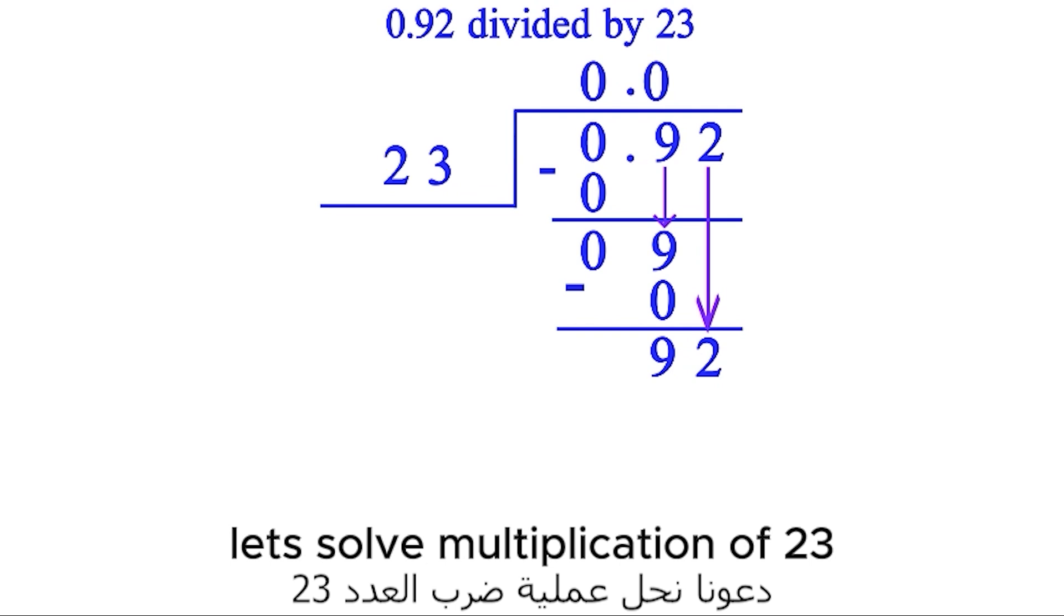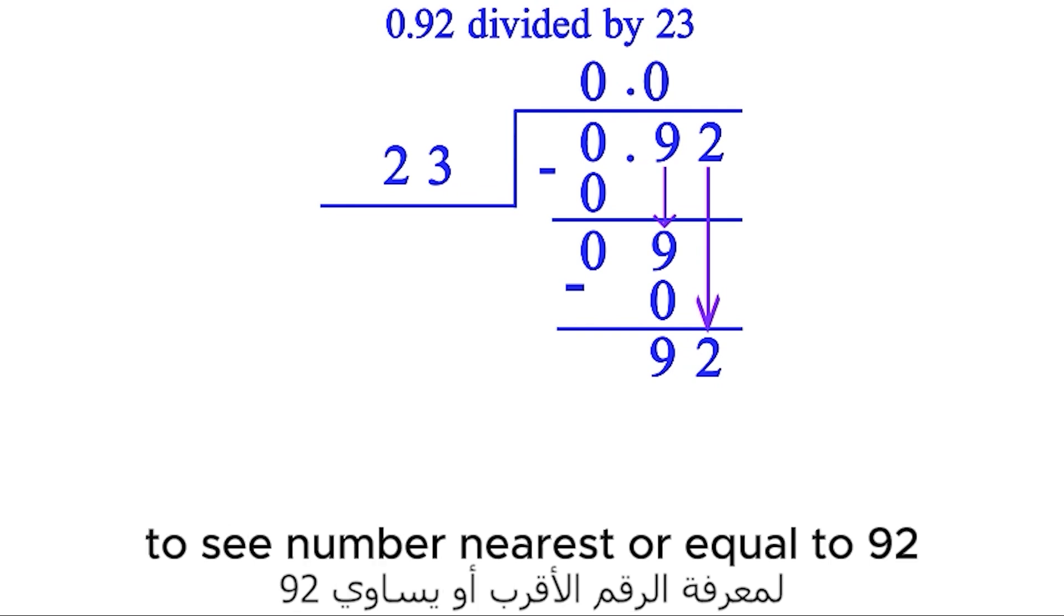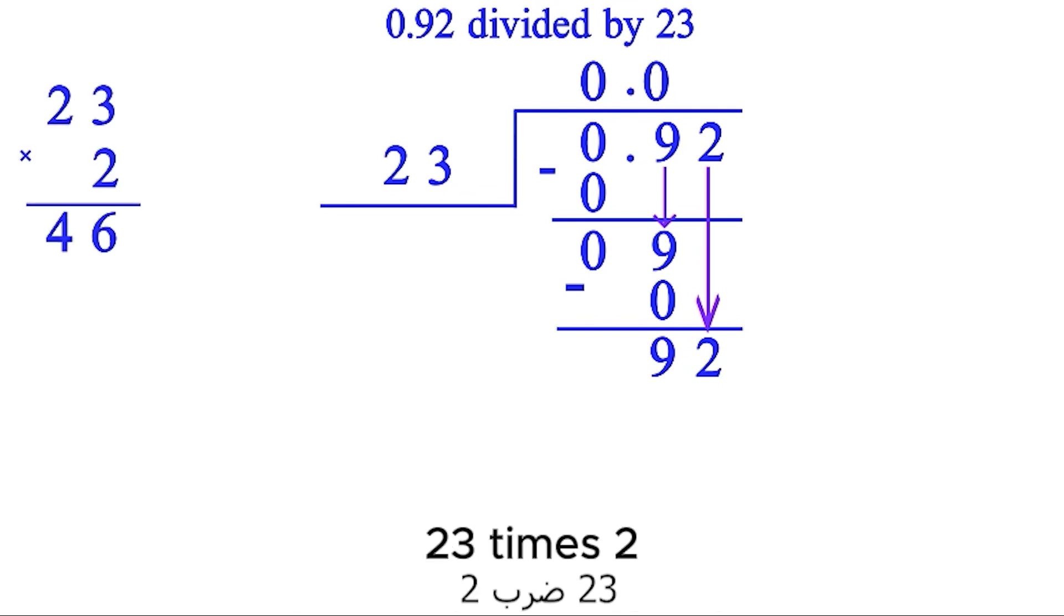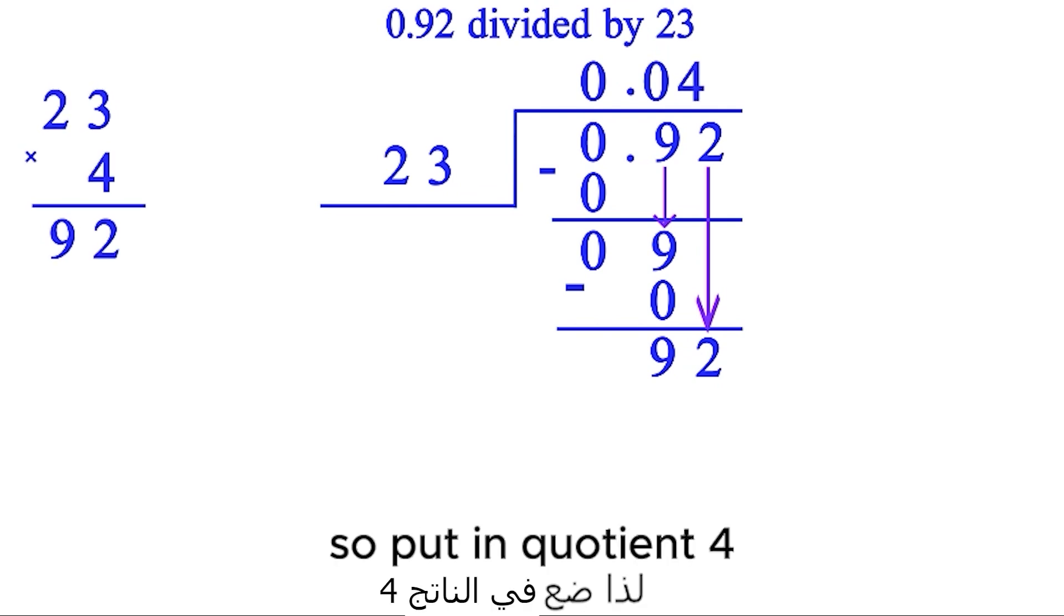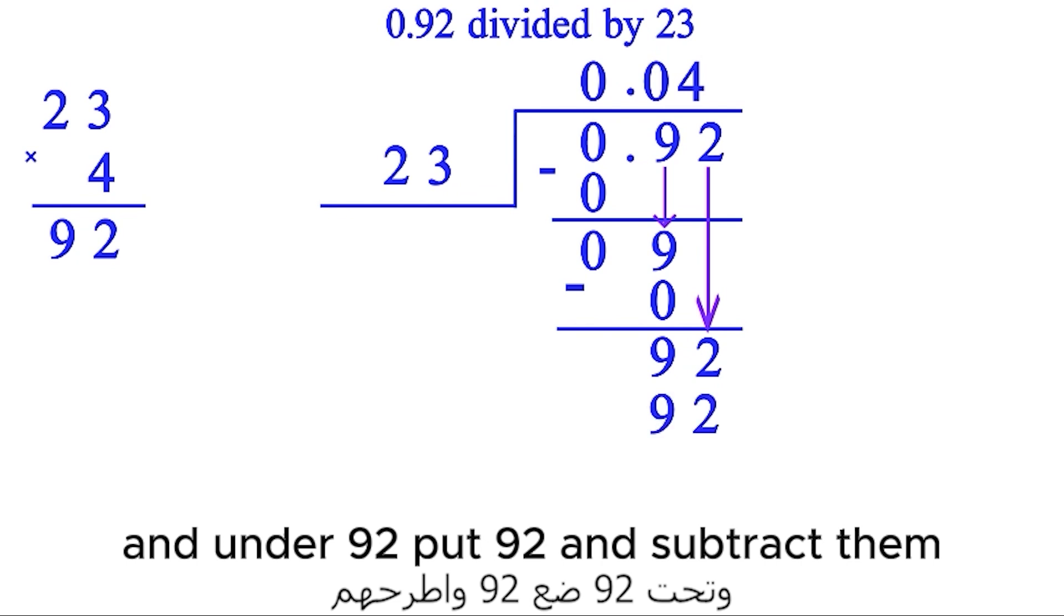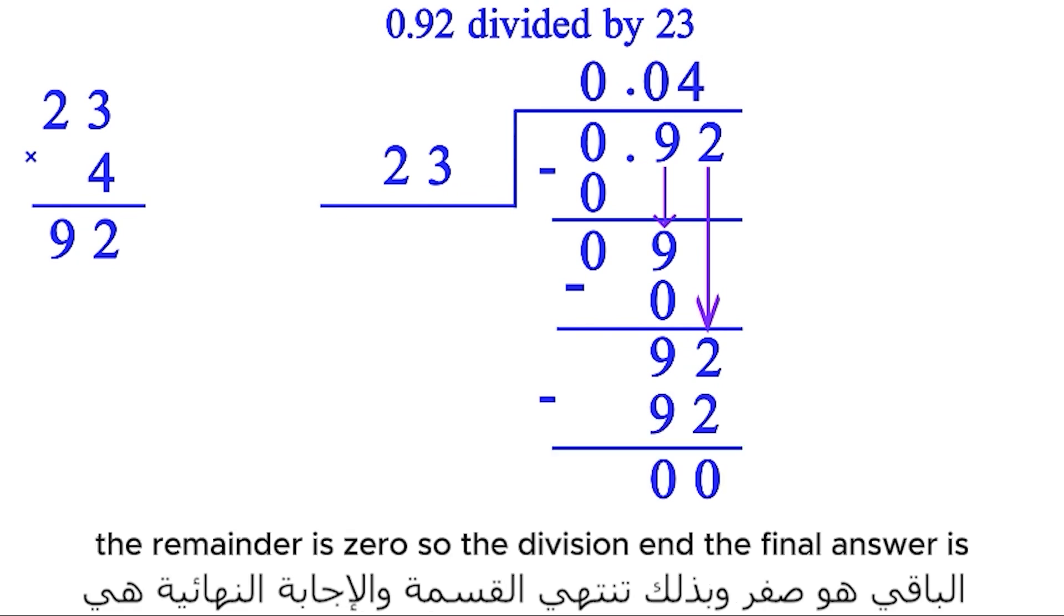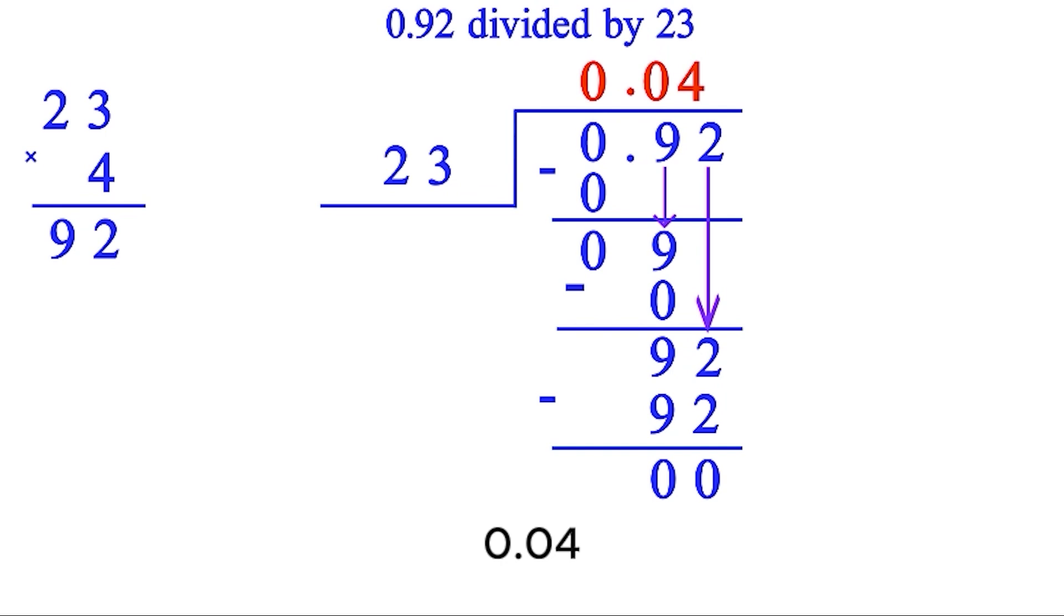Let's solve multiplication of 23 to see the number nearest or equal to 92. 23 times 2, 23 times 3, 23 times 4 - it is 92. So put in the quotient 4, and under 92 put 92 and subtract them. The remainder is 0, so the division ends and the final answer is 0.04.